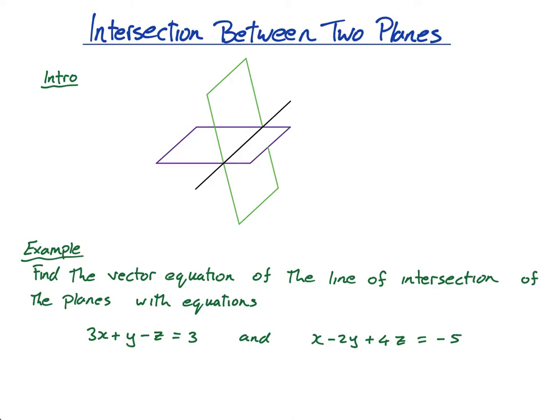Hi guys, so the next lesson we're going to do here is find the intersection between two planes. So, how do they meet? Well, look, here's a nice picture. Two planes. They meet at a straight line. So this black line is a straight line that goes through where these two planes meet.